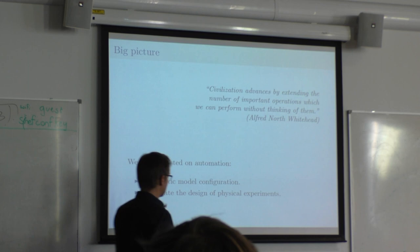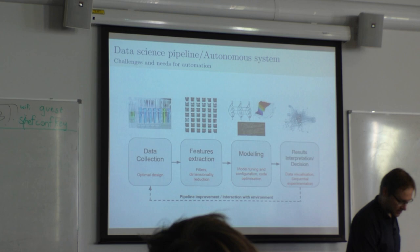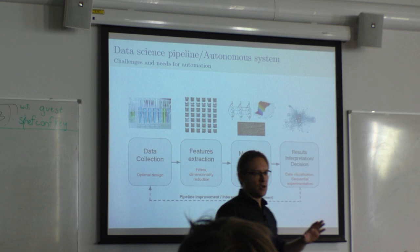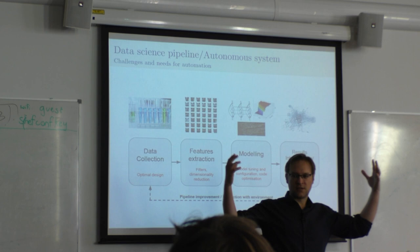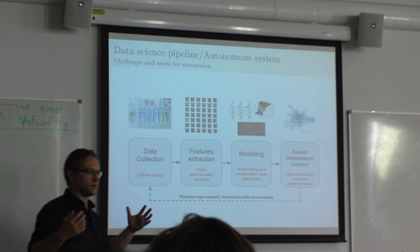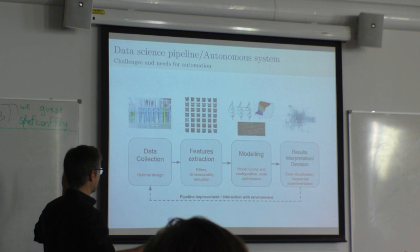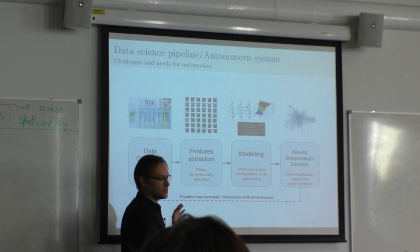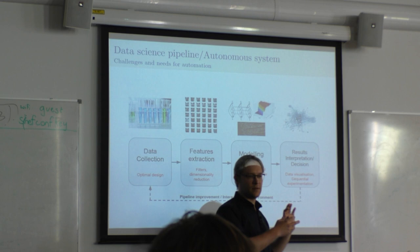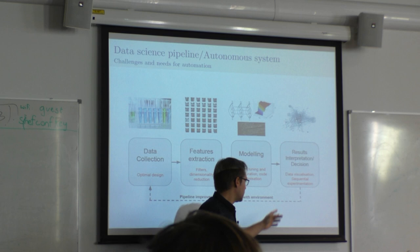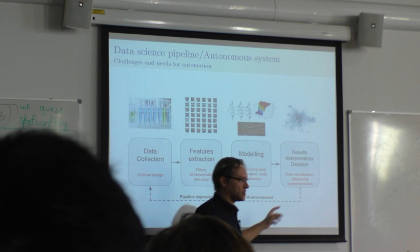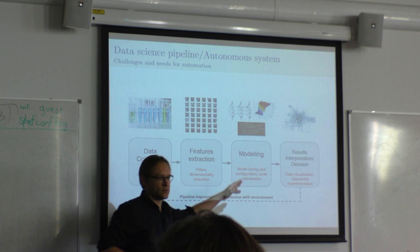When you think about data science, you can think about machine learning as one step within it. When doing data science, you have data collection, feature extraction, modeling, algorithm selection, results, and interpretation. Or if you're implementing a pipeline in an autonomous system, you collect data from the environment, do reinforcement learning, and make new decisions.